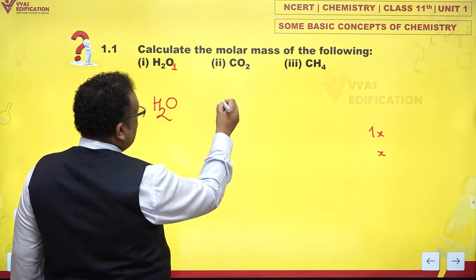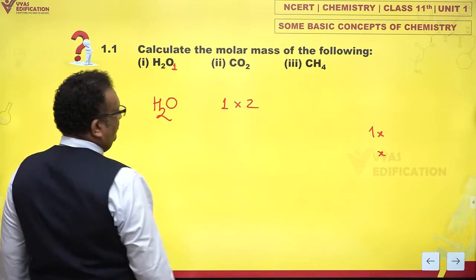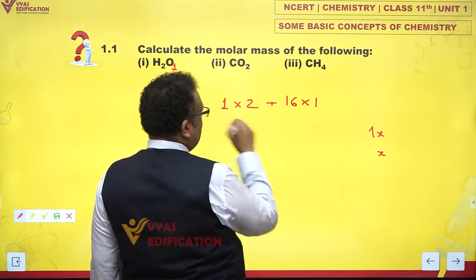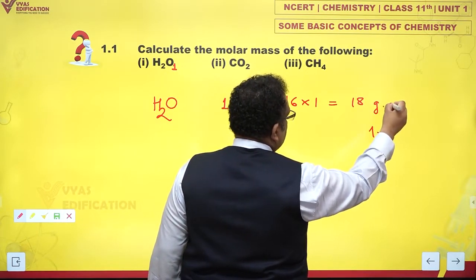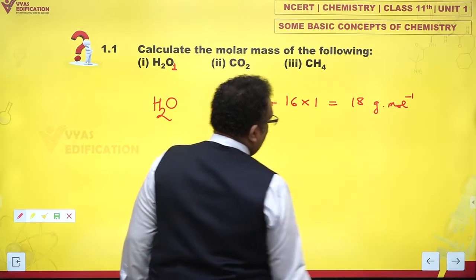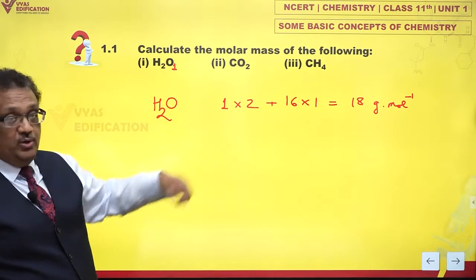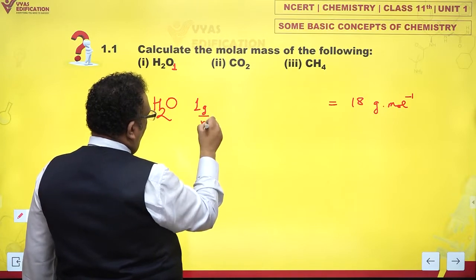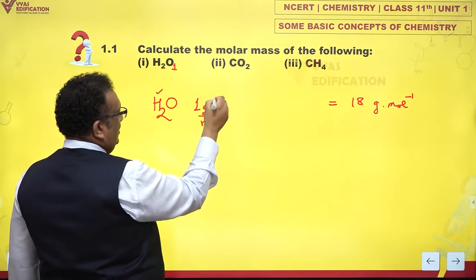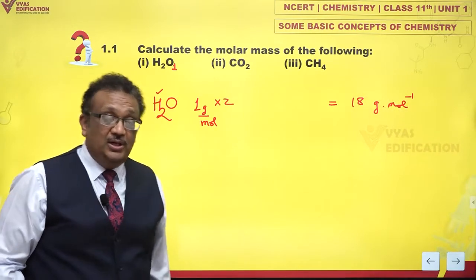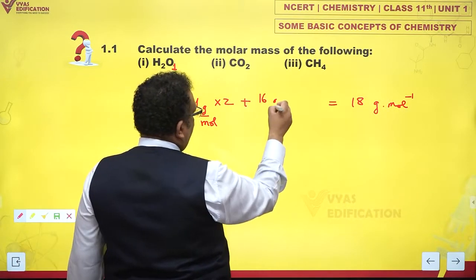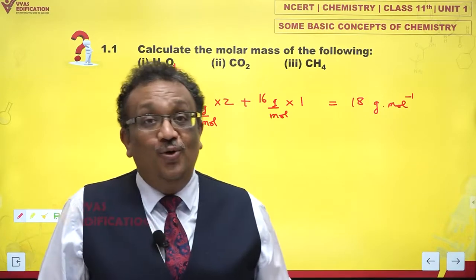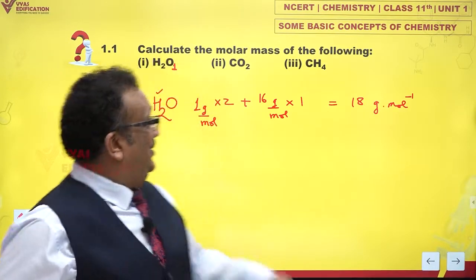Now, atomic mass of hydrogen is 1 g/mol and there are two atoms of hydrogen. Atomic mass of oxygen is 16 g/mol and there is one atom. If we just add up: 1 gram per mole for hydrogen into two, plus 16 grams per mole for oxygen into one — if you add up you get 18 grams per mole. This is the molar mass of water.